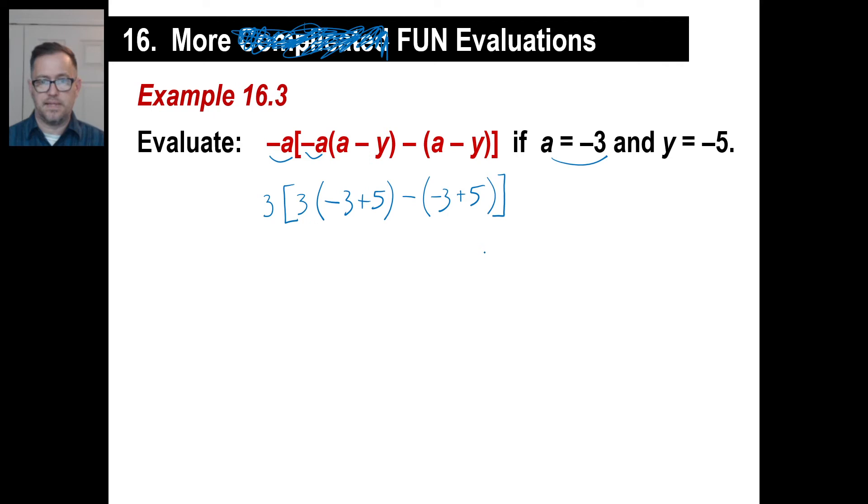Let's take a look at the inside here. Let's do parentheses first. Copying my 3, copying the bracket, copying the 3. Let's take care of these parentheses. Negative 3 plus 5, 2. Minus negative 3 plus 5, 2. You can put it in parentheses, or you don't have to. We'll do it just for convenience sake. Well, inside these parentheses, the order of operations has to be this first. So I'm copying my 3 outside. I've got a bracket. 3 times 2 is 6. Minus 2 is inside.